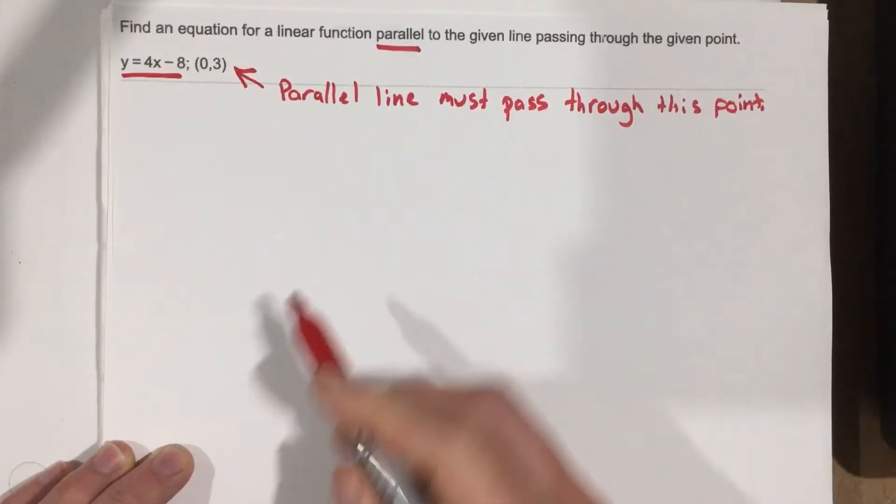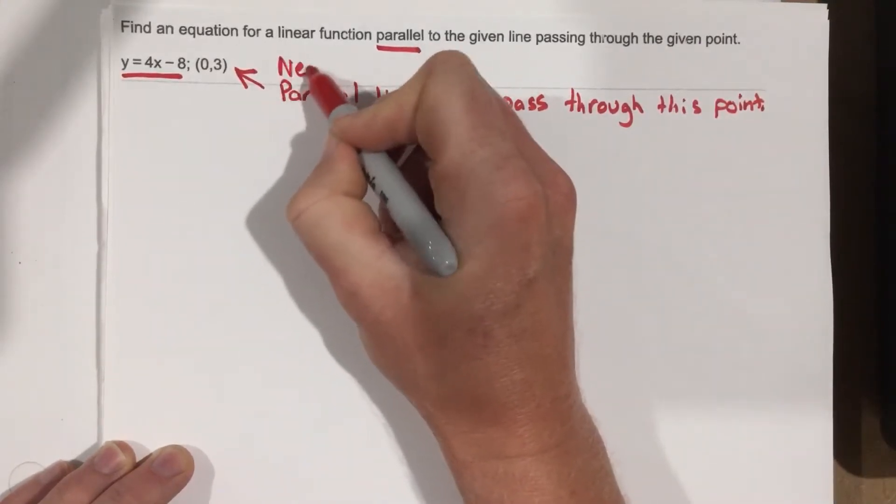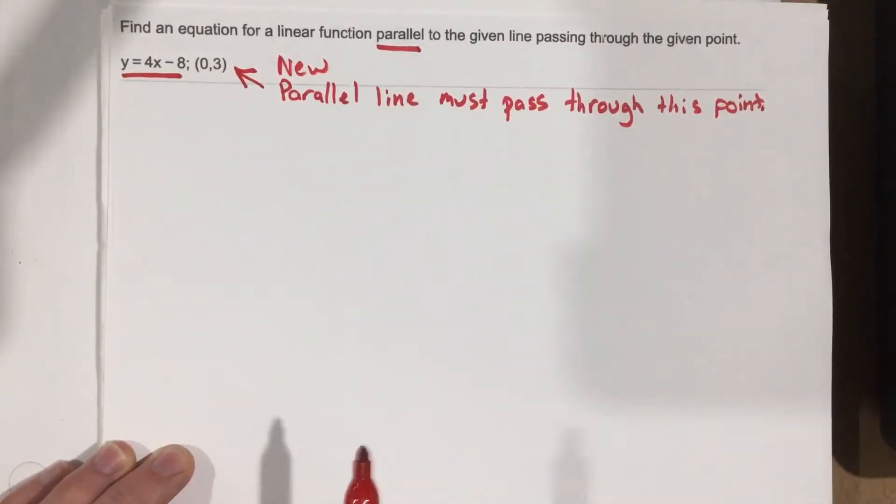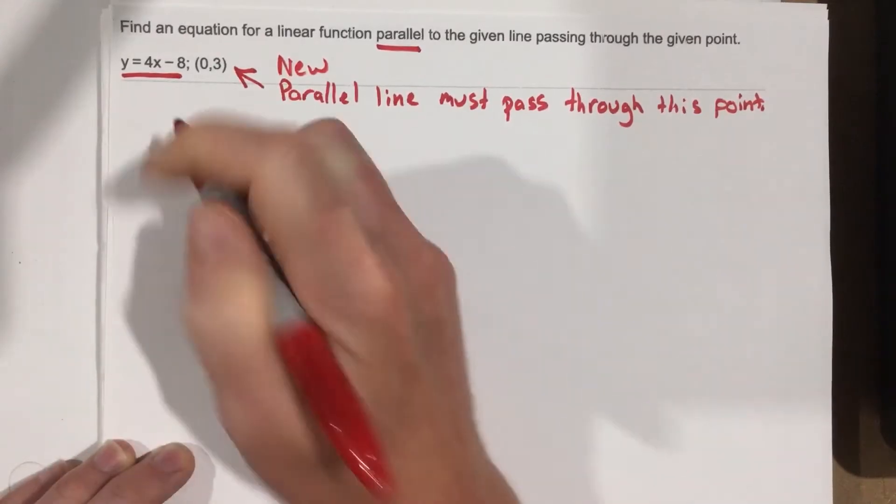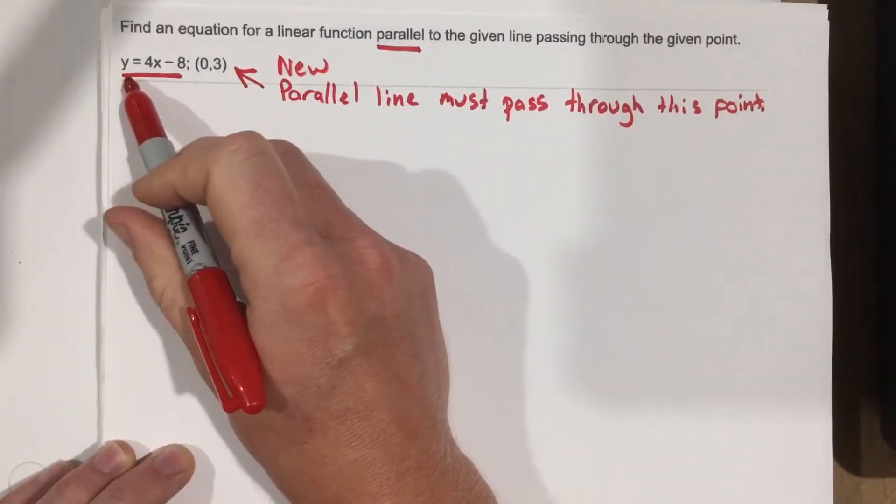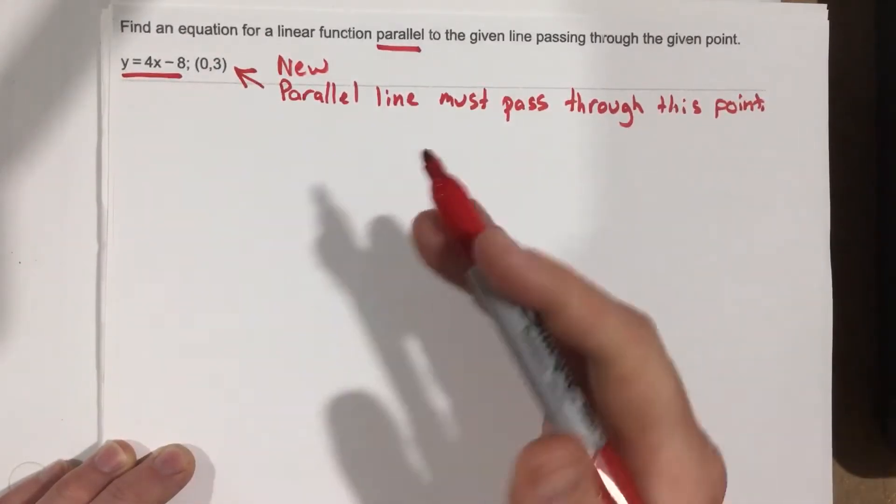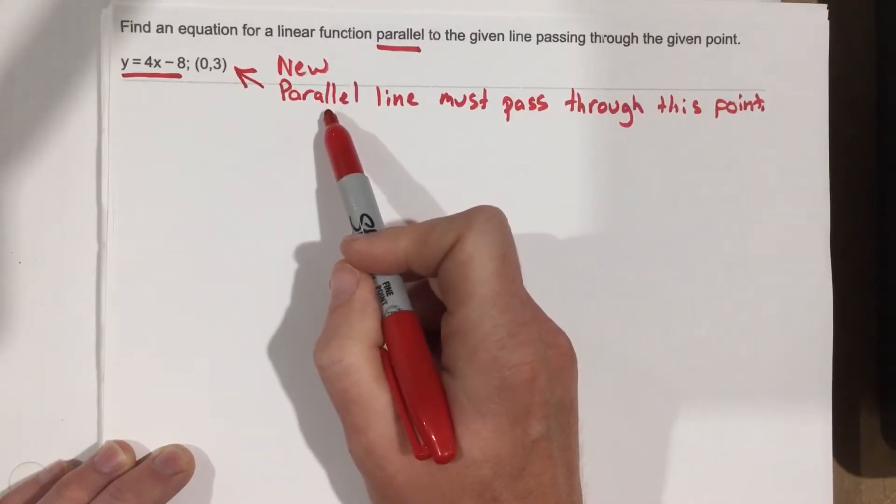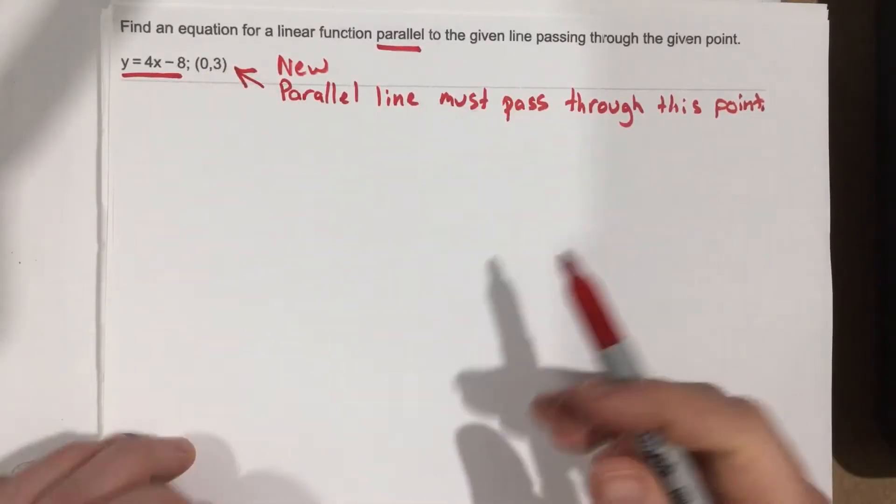Okay, so our new line, and I actually have put that right there, new parallel line must pass through this point. So they give us the original equation, which is y equals 4x minus 8. They want us to write a new line that's parallel and goes through that point. Okay, we can do that.